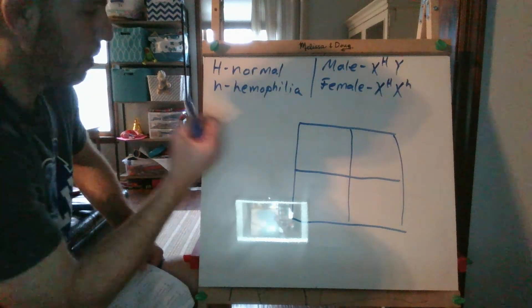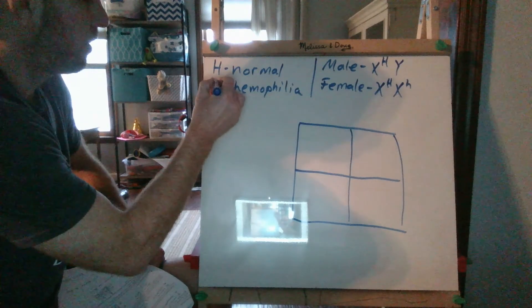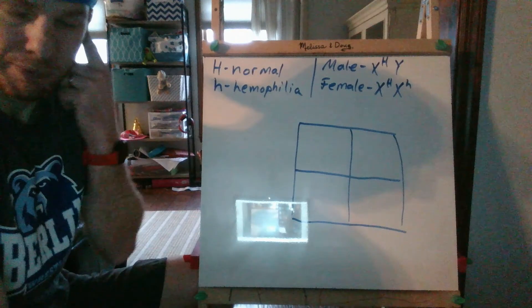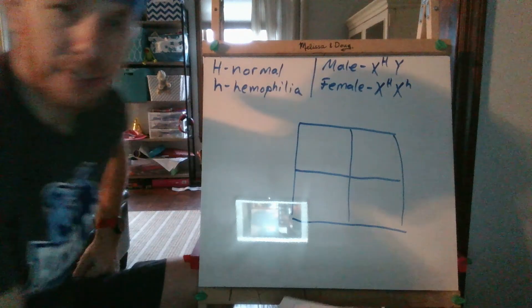Big H is normal, lowercase h is hemophilia. Hemophilia is a blood clotting disease where people have a hard time clotting blood. So if they get a cut, it bleeds a lot.